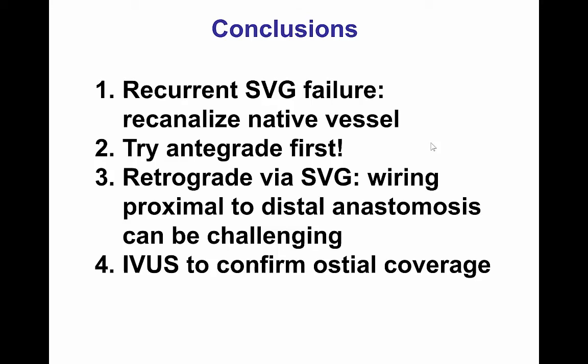Retrograde crossing through a vein graft can be challenging when navigating proximal to the distal anastomosis when the angle is tight, and that can be a limiting factor for the retrograde approach. Finally, IVUS can be useful for confirming good coverage of the ostium with stent, which can minimize the risk for subsequent in-stent stenosis. Thank you.